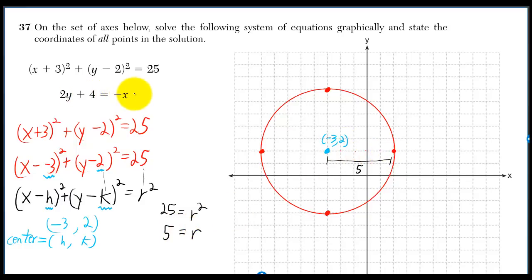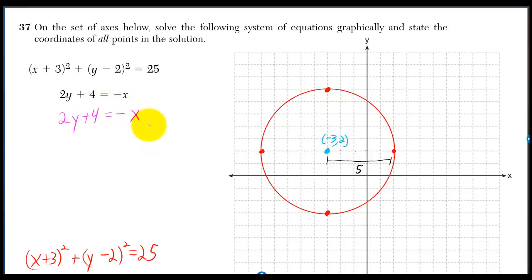Now we have to graph the second equation. I'll solve it for y first. I'll first subtract 4 and then divide by 2. We get y is equal to negative x over 2 minus 2.